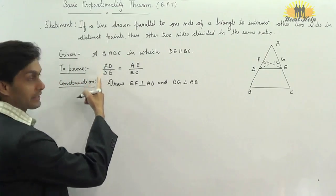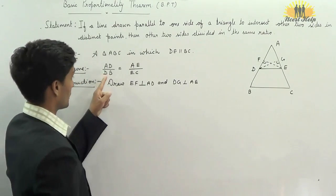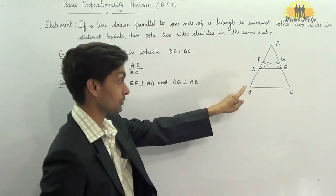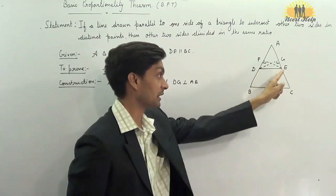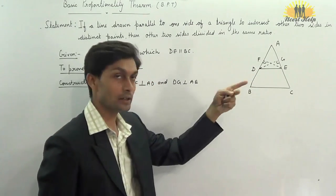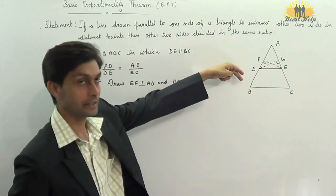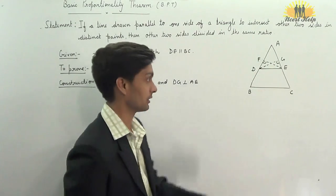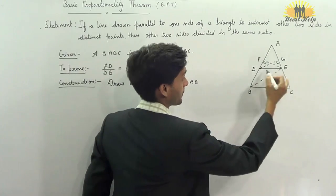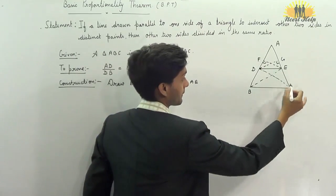As we have to prove AD upon DB, for DB, we have to join CD and BE as DB is not the side of any triangle. We need to make triangles which contain the side DB and AC. So, we have to join BE and CD.